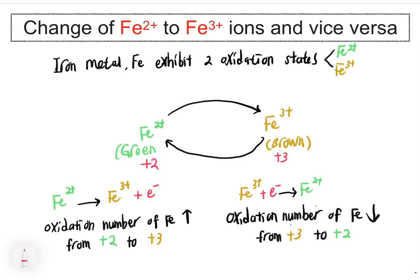The oxidation number of ions is equal to its charge. Since the oxidation number of Fe2+ increases to become Fe3+, that process is oxidation. From Fe3+ to Fe2+, the oxidation number of Fe decreases from plus three to plus two, so that decrease in oxidation number means the process is reduction.